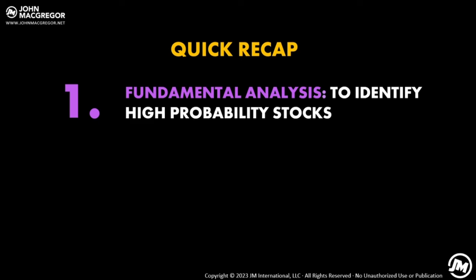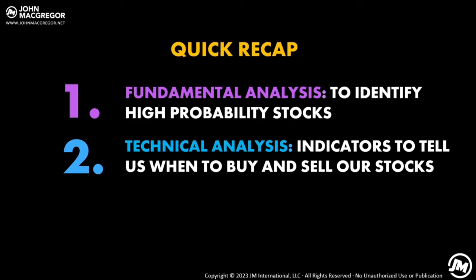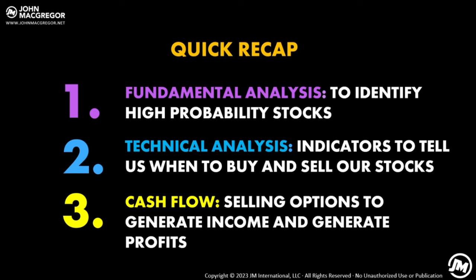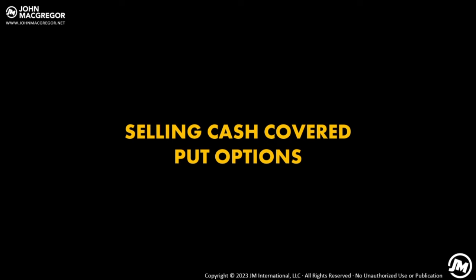Now let's talk about selling cash-covered put options — another great way to generate instant income and also buy stocks at a more favorable price. Let's look at Super Micro Computer, ticker SMCI, which was trading at $255 per share. I didn't want to pay $255 — I felt $245 was a fair price. So I'm selling one put contract with a strike price of $245. For doing this, I immediately pocketed approximately $8.91 per share, which equates to $891 of income immediately. The contract was for 16 days — that's a 3.6% return in basically two weeks.